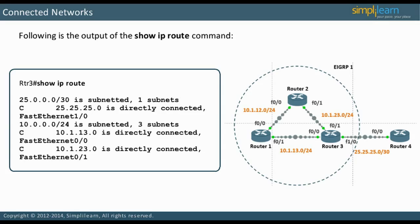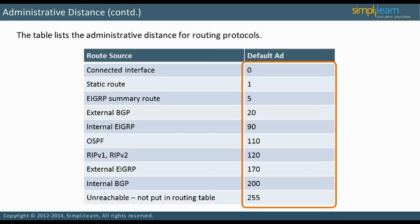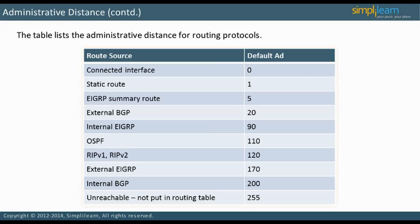Let us discuss NextHop, a routing term, in the next slide. Each routing source is assigned a number from 0 to 255 that rates how trustworthy it is. The table on the slide shows the default administrative distance for routing protocols. Take some time to study it.